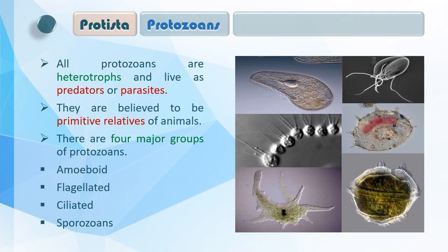पूरा animal kingdom protozoa से ही form हुआ ऐसा माना जाता है। There are four major groups of protozoas: Amoeboid, Flagellated, Ciliated, and Sporozoas। हम एक-एक करके detail में पढ़ेंगे protozoas की चारों categories को।